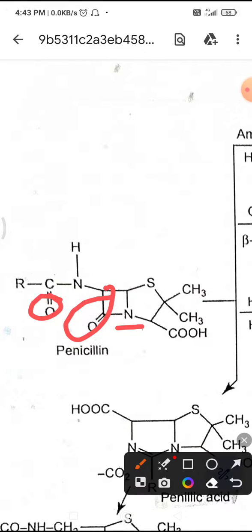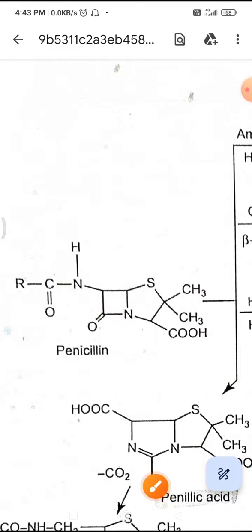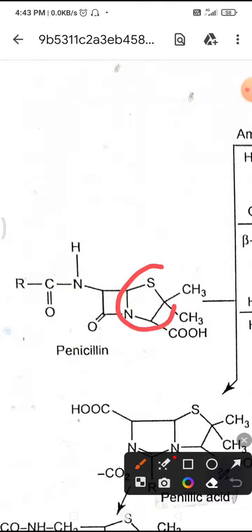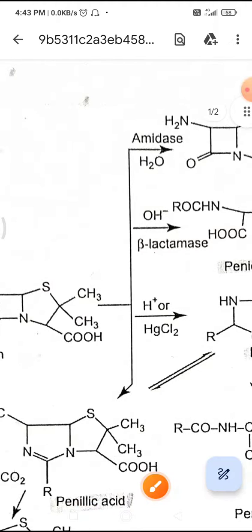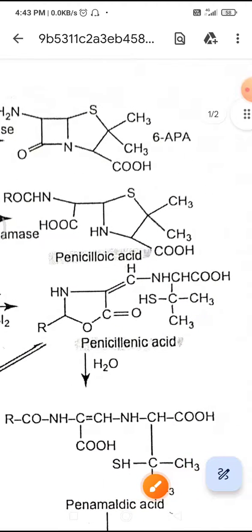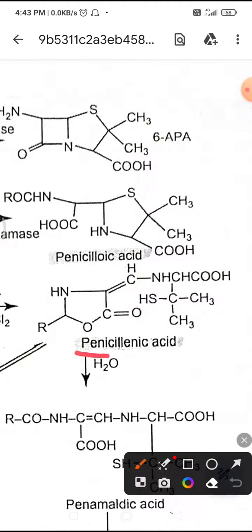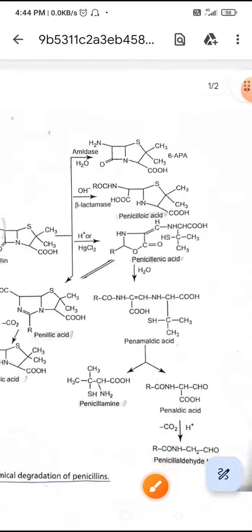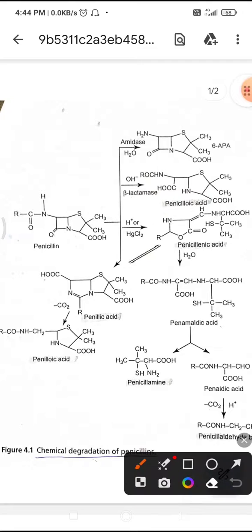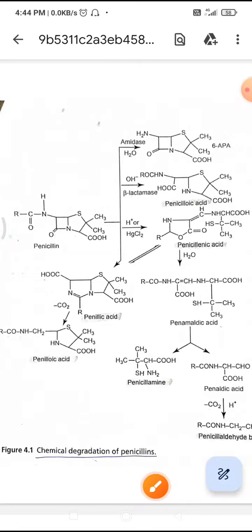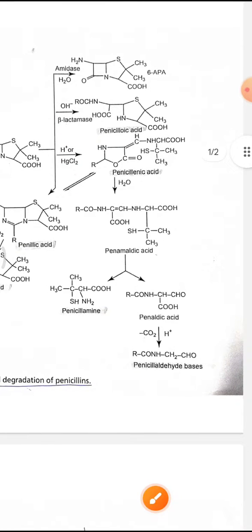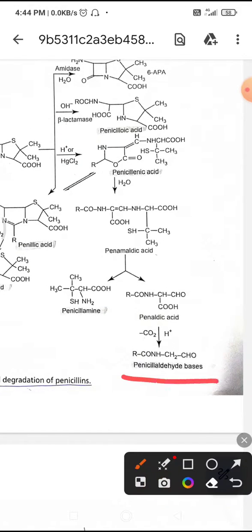The subsequent opening of the beta-lactam ring can destabilize the thiazolidine ring, which opens to form penicillanic acid that degrades into two major products: penicillamine and penilloic acid. One more product is formed: the penicillaldehyde bases.